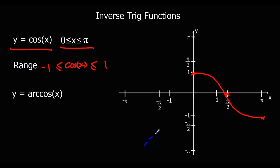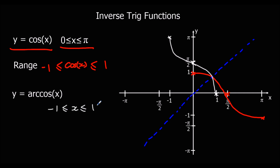Now we're going to reflect it, so we've got the line y equals x again. The key points for the inverse: 0, 1 becomes 1, 0; pi over 2, 0 becomes 0, pi over 2; and pi, minus 1 will become minus 1, pi. So then we draw the reflection, and there's our arccos function. The domain will be between minus 1 and plus 1 — the domain of the inverse is the range of the original, and the range of the inverse is the domain of the original.